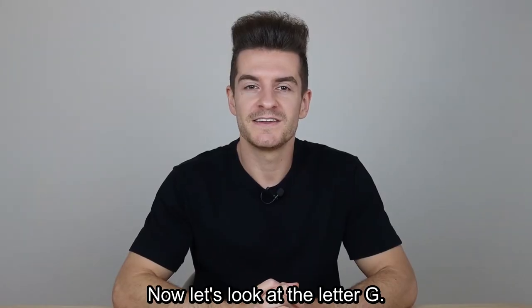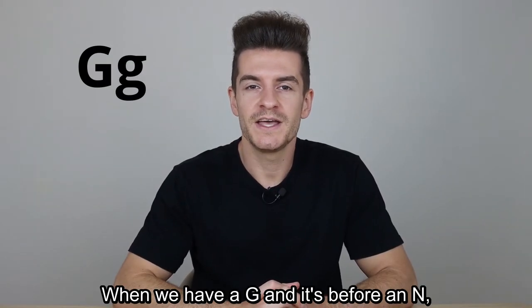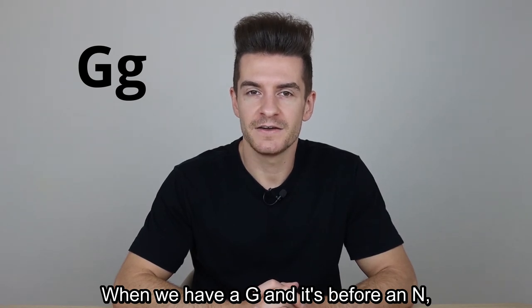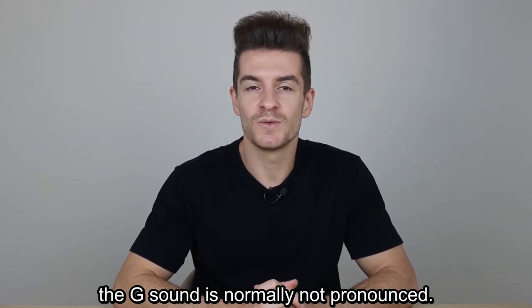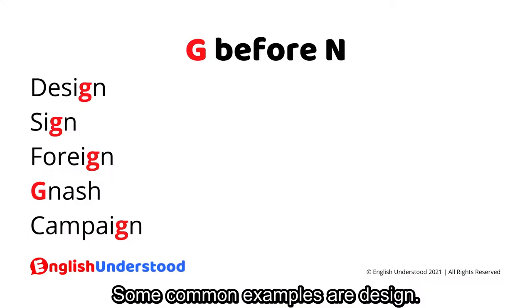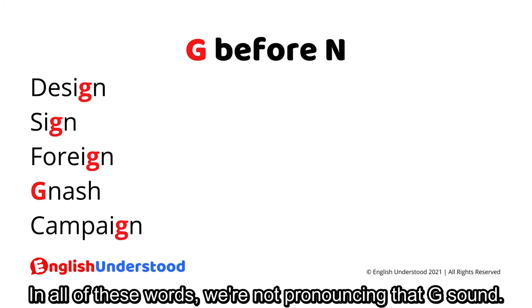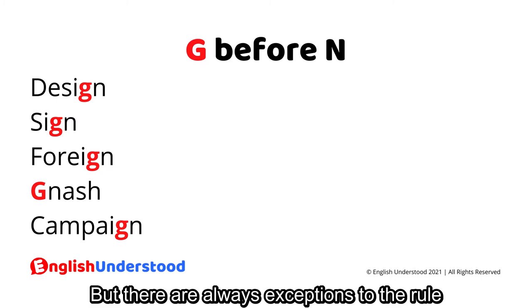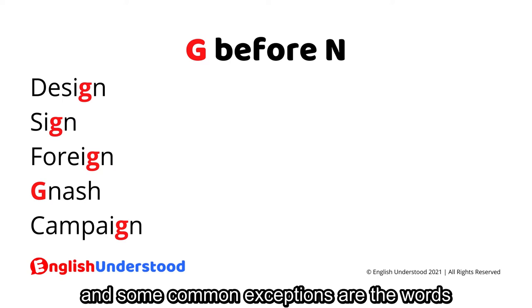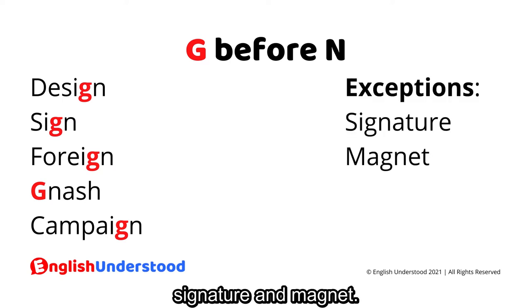Now let's look at the letter G. When we have a G before an N, the G sound is normally not pronounced. Some common examples are: design, sign, foreign, gnash, campaign. In all of these words, we're not pronouncing that G sound. But there are always exceptions — some common exceptions are the words 'signature' and 'magnet,' where we do pronounce the G sound.